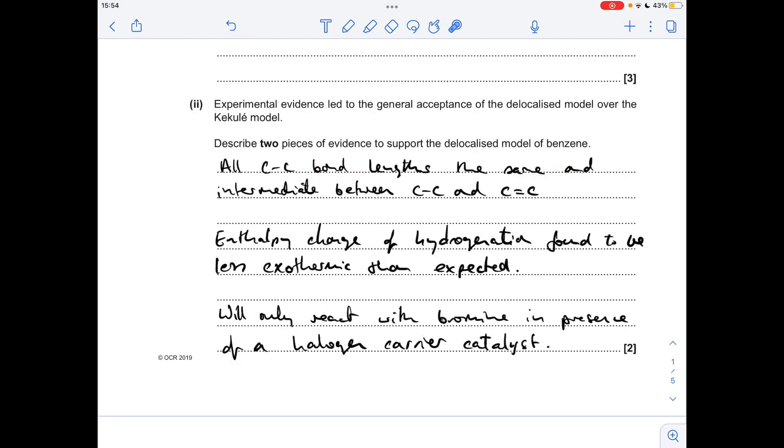Next part, two pieces of evidence to support the delocalised model for benzene. You'll see I've given all three there. So you could talk about the carbon carbon bond lengths so you just say that they're all the same length and intermediate between carbon carbon single and carbon carbon double.